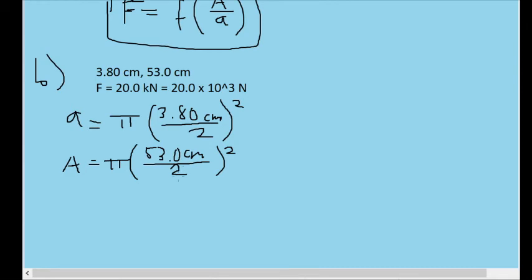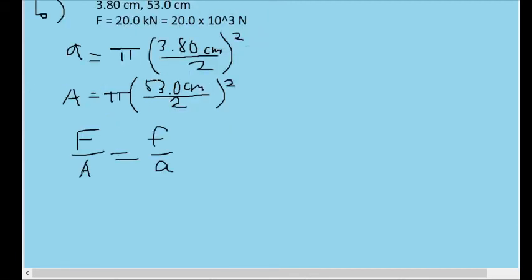Let's also find a formula for the force on the small piston represented by small f. Looking back at our F over A equals f over a formula, let's multiply both sides by the small a to isolate the small f.